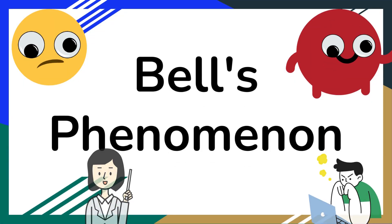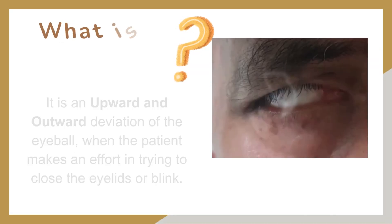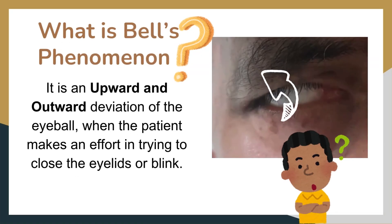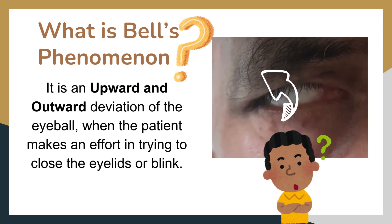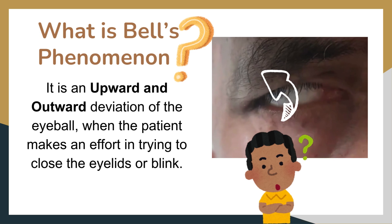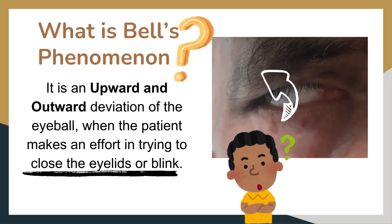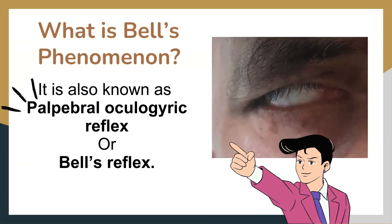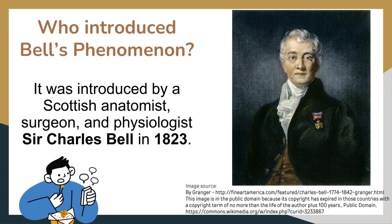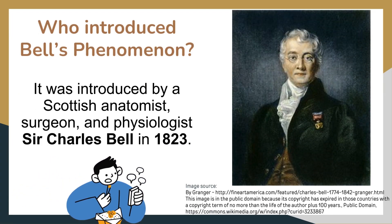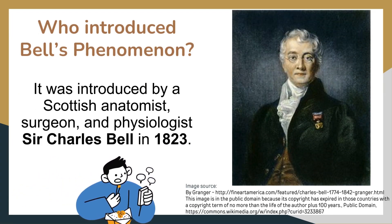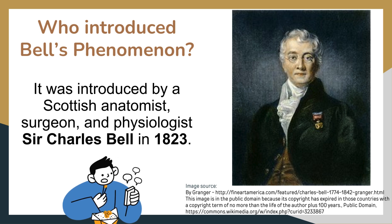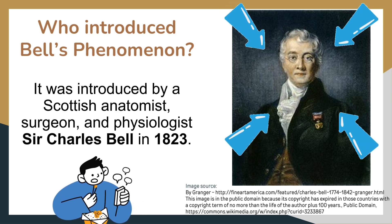Bell's phenomenon. What is Bell's phenomenon? It is an upward and outward deviation of the eyeball when the patient makes an effort in trying to close the eyelids or blink. It is also known as palpebral oculogeric reflex or Bell's reflex. It was introduced by a Scottish anatomist, surgeon and physiologist Sir Charles Bell in 1823.